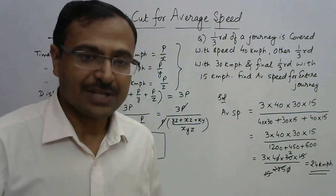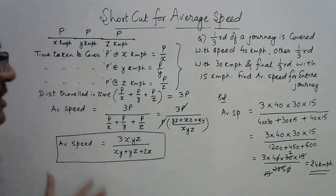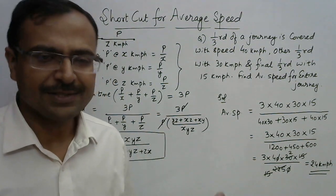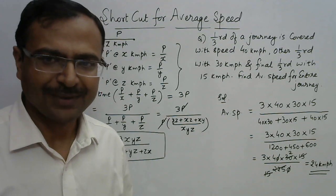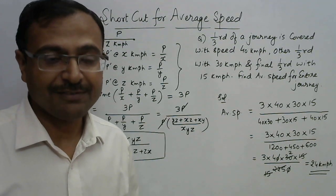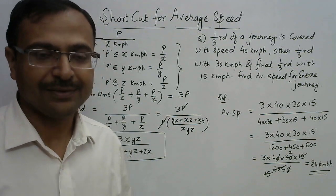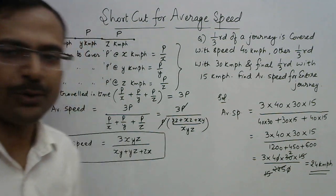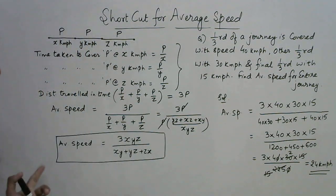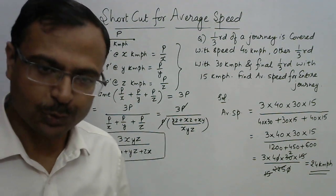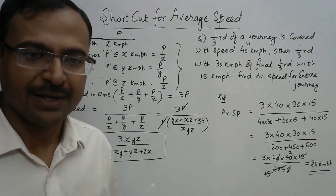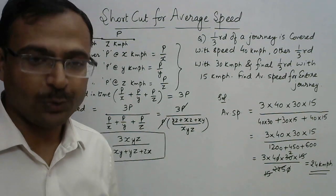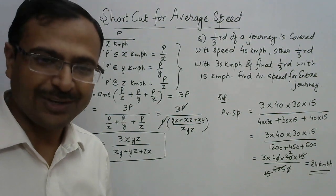Friends, how much time will you take to solve it through this method? I think less than seven to eight seconds. Students who have achieved that speed clear entrance examinations very comfortably. This is a very important video for all those preparing for the quantitative aptitude portion of railways and banking exams. If you like it, share it with your friends and do not forget to subscribe to the channel for more videos.